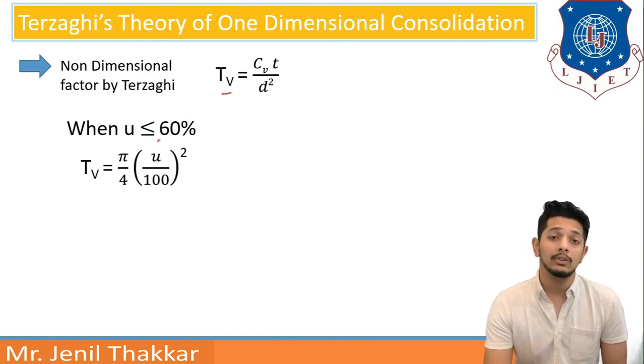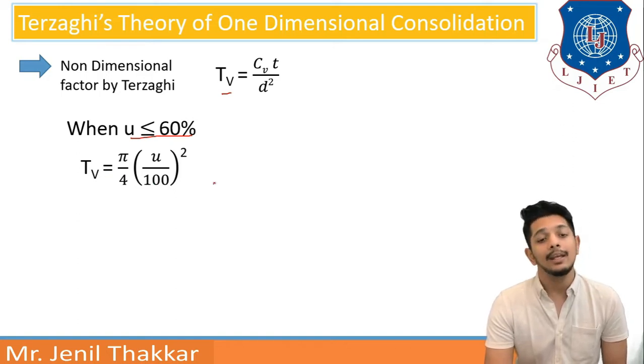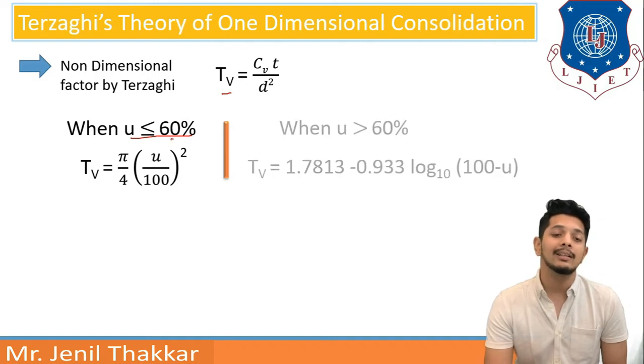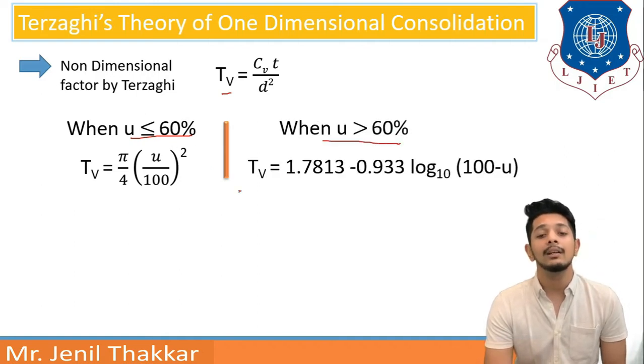Now if degree of consolidation is less than 60% then Tv can be written as empirical formula can be written as pi by 4 into U by 100 square.